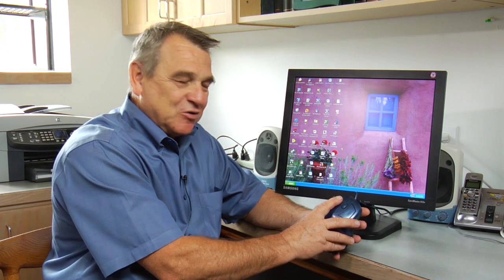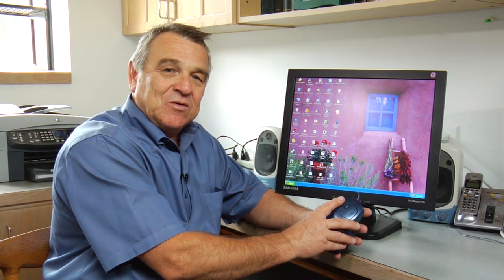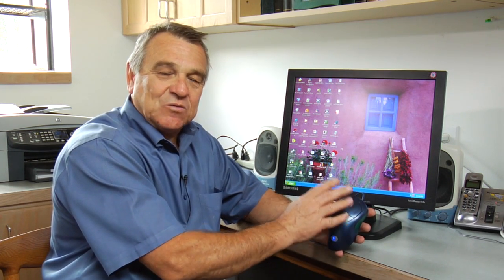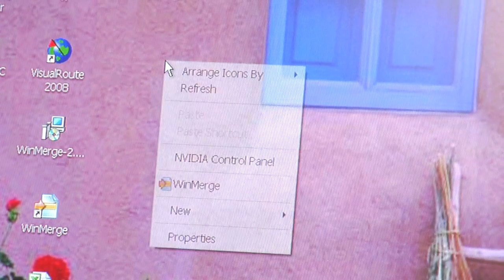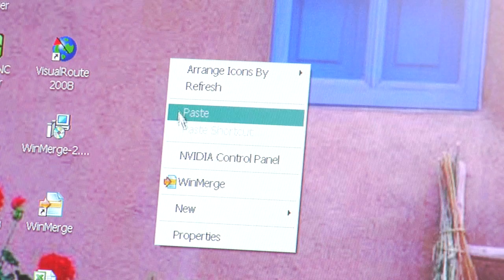For example, I might push the left-hand button and it would automatically click twice on whatever I was centered on the screen. On the right-hand side, I might click and it would open up a menu that would give me choices.